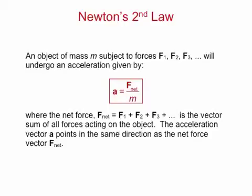Quantitatively, Newton's second law states that an object of mass m, subject to various forces f1, f2, f3, and so on, will undergo an acceleration given by A equals f sub net divided by m, where the net force, defined by f sub net equals f1 plus f2 plus f3 plus dot dot dot, is the vector sum of all forces acting on the object. Note that the acceleration vector A points in the same direction as the net force vector, f sub net.